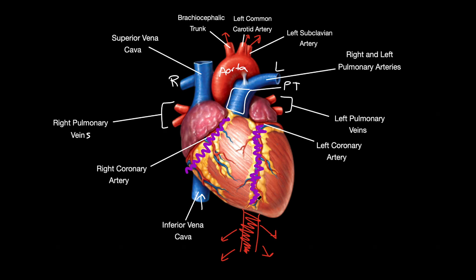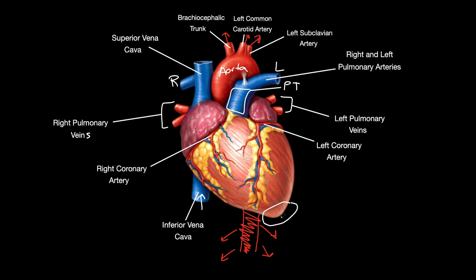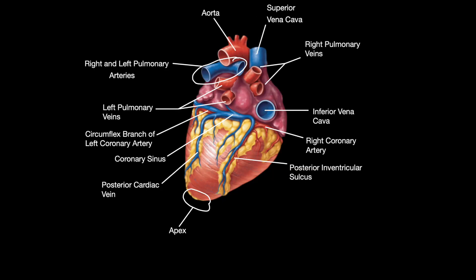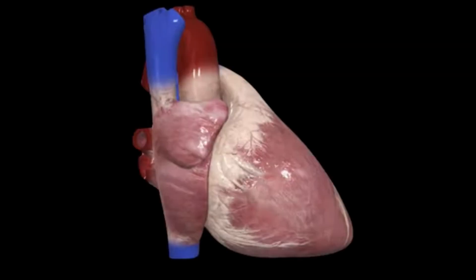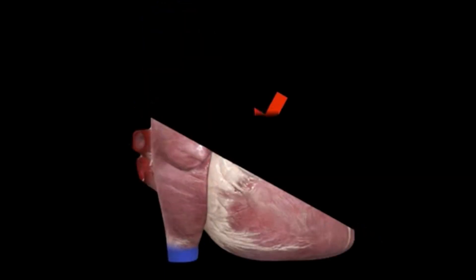We will discuss the atria and ventricles in detail shortly. Lastly, at the tip we have the apex. Now we're going to quickly look at the posterior view of the heart. We have the same structures as the front view but this time we can see how they look from behind. Let's now cut the heart in half to see the inside and examine the chambers and valves.